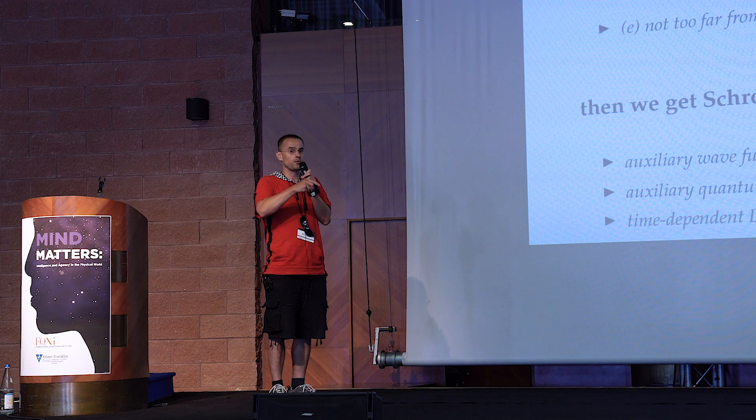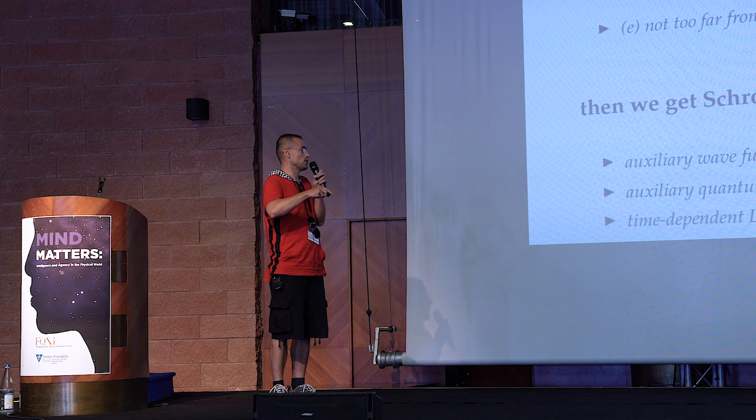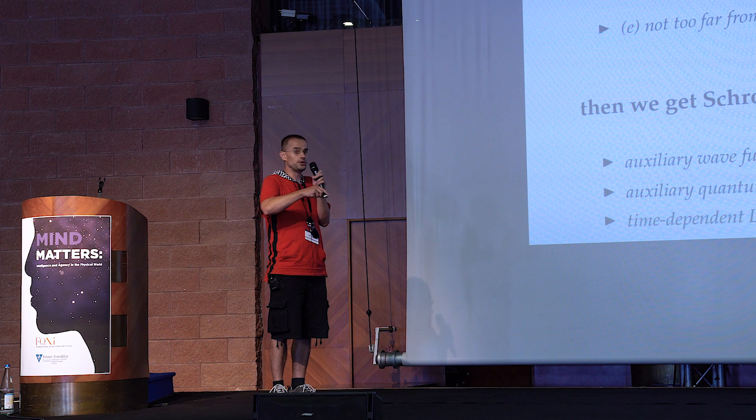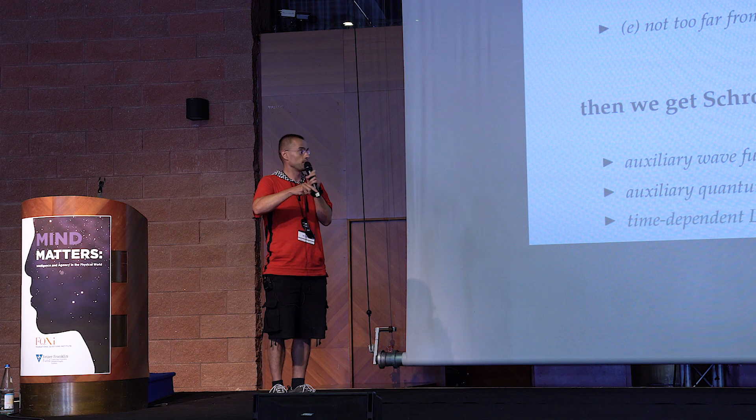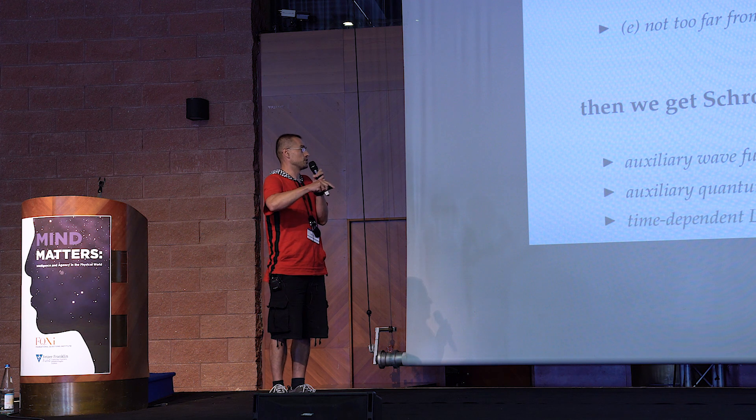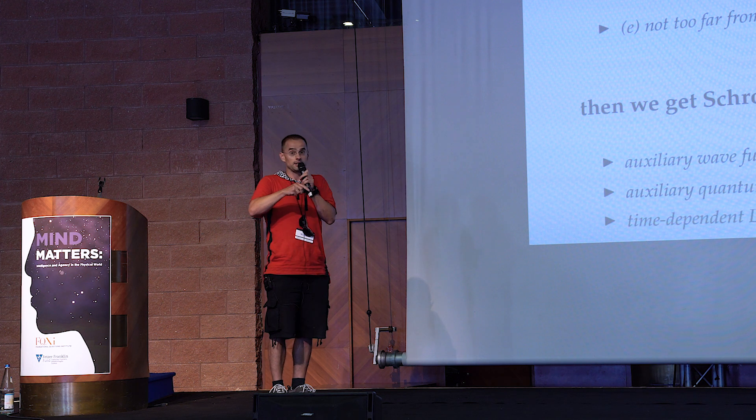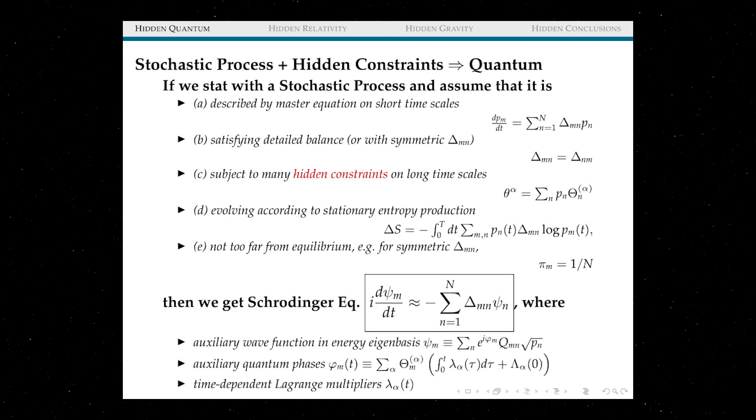and this Schrödinger equation does have complex phases, and those complex phases are nothing but linear combinations of certain things that come from Lagrange multipliers. So here it is. It's only approximate and it's only close to equilibrium with all those assumptions may or may not be relevant to the real quantum mechanics, and so I call it a hidden quantum.